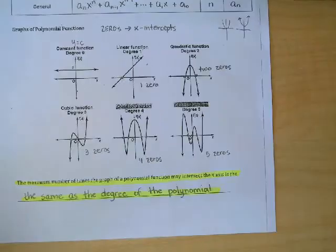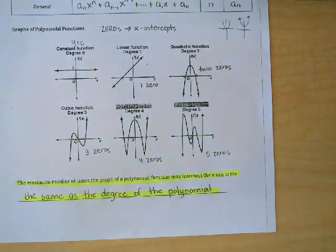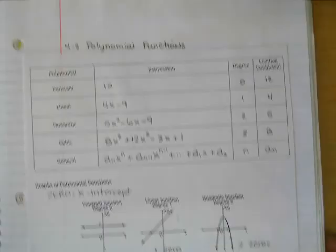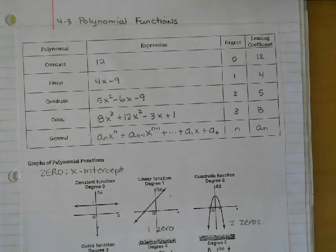What you're going to do is trim this out and put it in your notebook with the heading that says 4.3 polynomial functions. That's it.